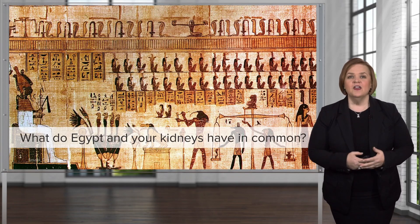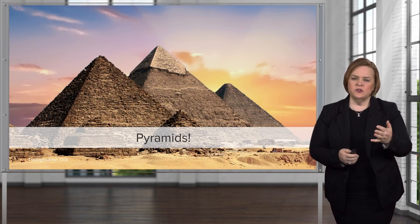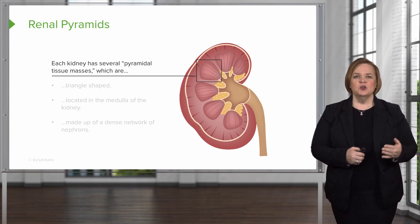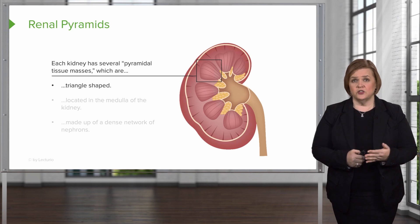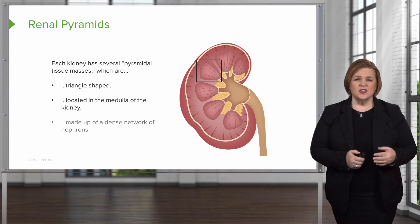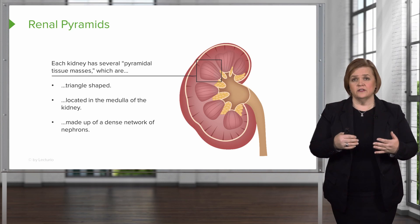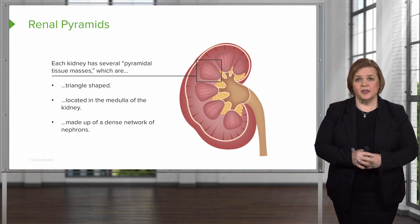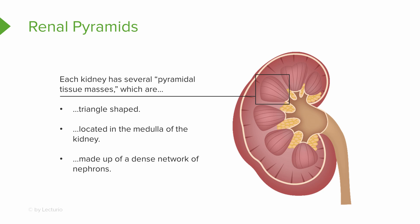What do Egypt and your kidneys have in common? Pyramids! Renal pyramids are triangular-shaped tissue masses located in the medulla of each of your kidneys, and they're made up of a dense network of nephrons. Take a look at the picture of the kidney — you see the medulla, then the cortex, and the capsule. See if you can write those structures in on your notes as a way to use spaced repetition. So renal pyramids are triangle-shaped, they're in the medulla, and they're made up of a dense network of nephrons.